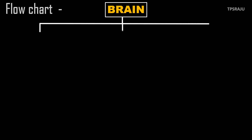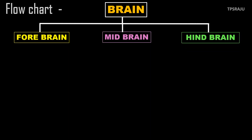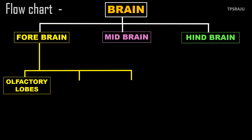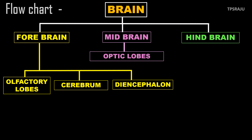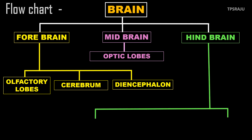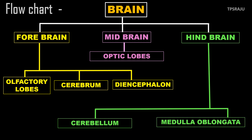Now, the flowchart shows brain parts. Brain has three divisions: forebrain, midbrain and hindbrain. Forebrain consists of three parts: olfactory lobes, cerebrum and diencephalon. Midbrain has optical lobes. Hindbrain has two parts: cerebellum and medulla oblongata.